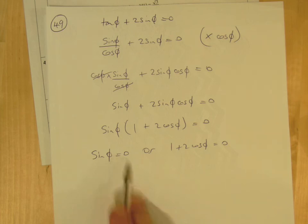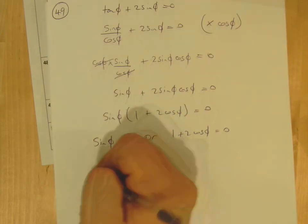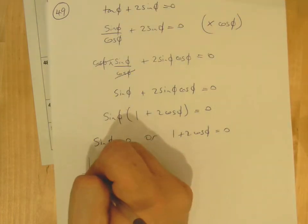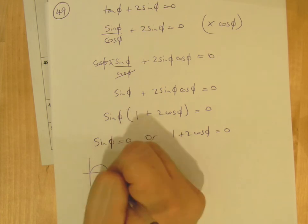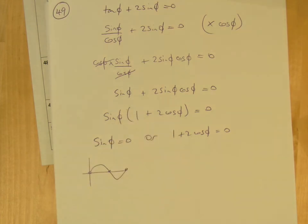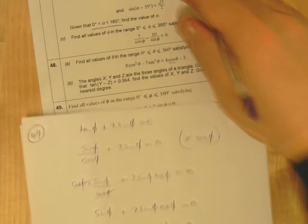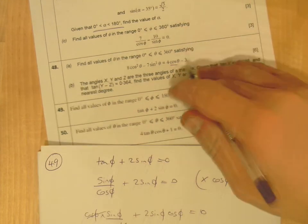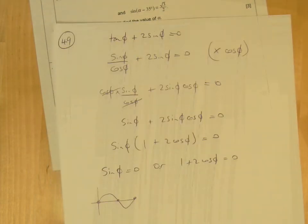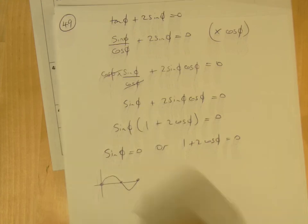If the first thing is zero, sin φ, that's really easy. You just draw a quick sketch and see where this equals zero. We need solutions between 0 and 180, so basically these two solutions: φ = 0 and 180.